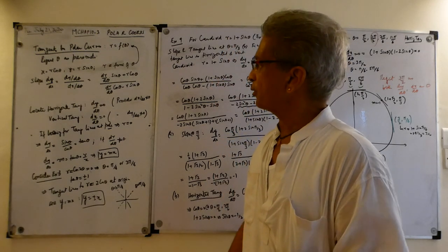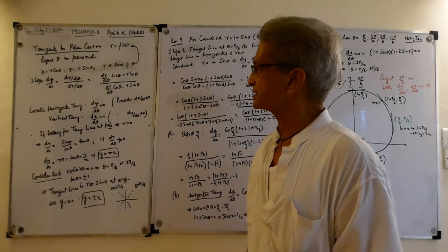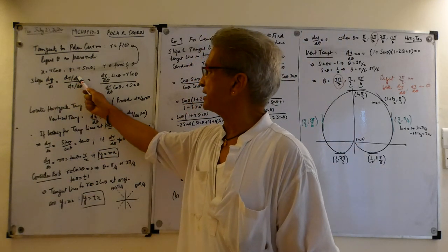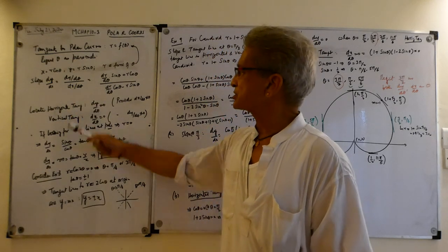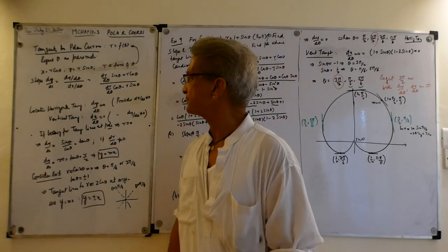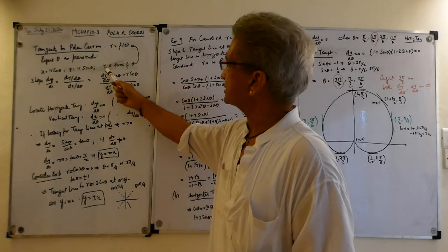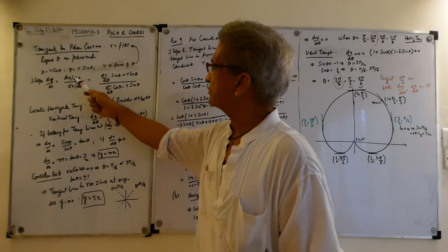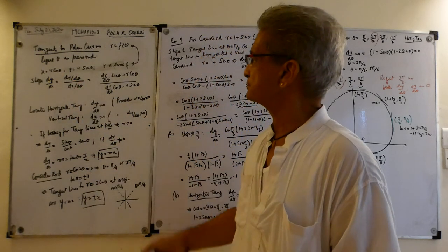Now the slope we are wanting to find — remember when we were doing t as the parameter, we had dy/dx equals dy/dt divided by dx/dt. Now instead of t, I have θ here; θ is the parameter. So you're going to differentiate y with respect to θ and differentiate x with respect to θ, and just divide the two.